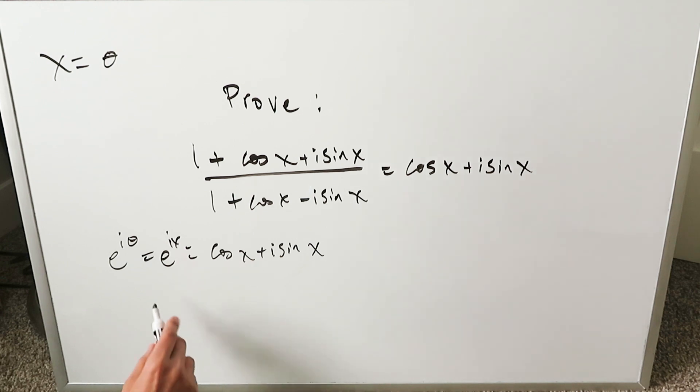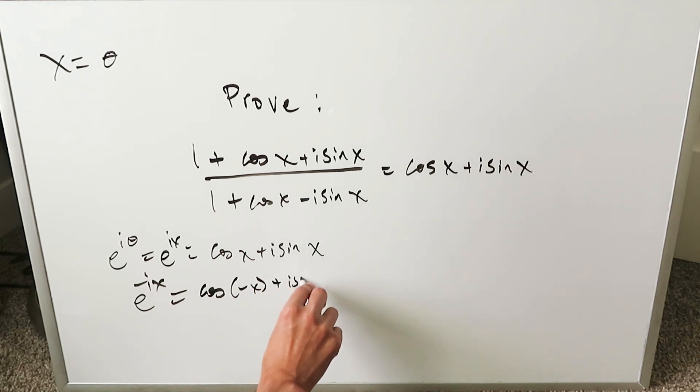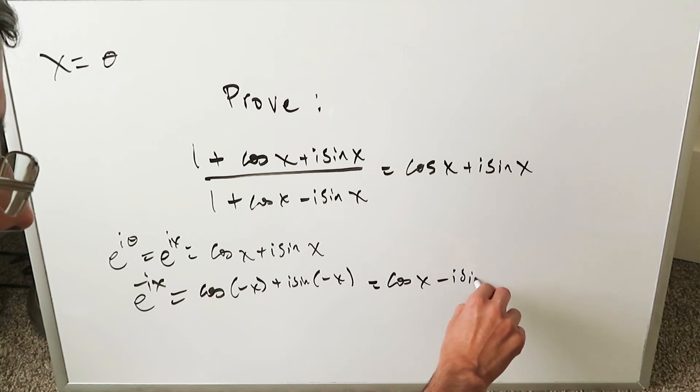You also need to understand e^(-ix). When you expand it using Euler's identity, it equals cos(-x) + i sin(-x). Because cosine is an even function and sine is an odd function, the result is cos x - i sin x.